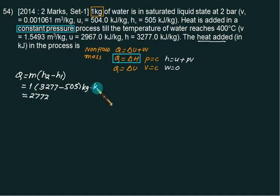We can calculate this value directly; enthalpies are given in this problem. The unit is kg times kJ/kg, so your answer will come in kilojoules: 2772 kJ.